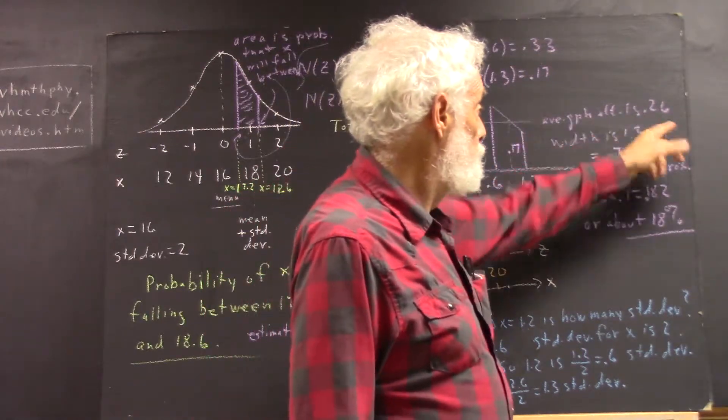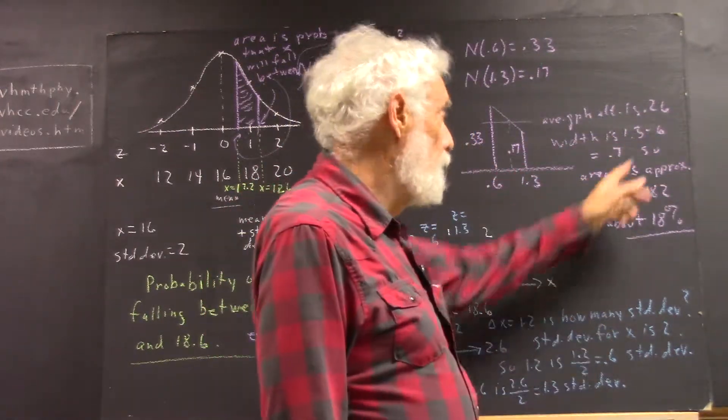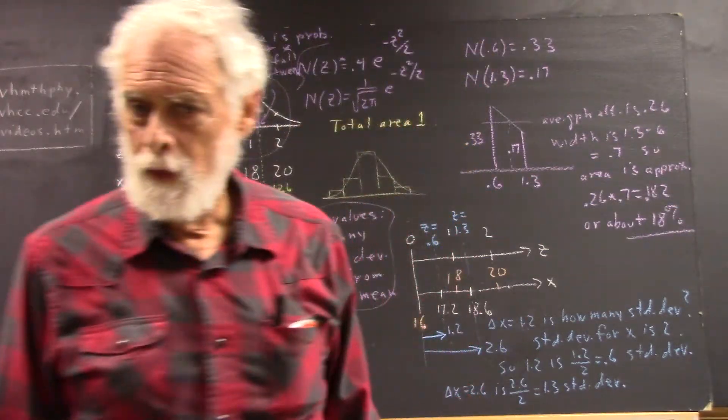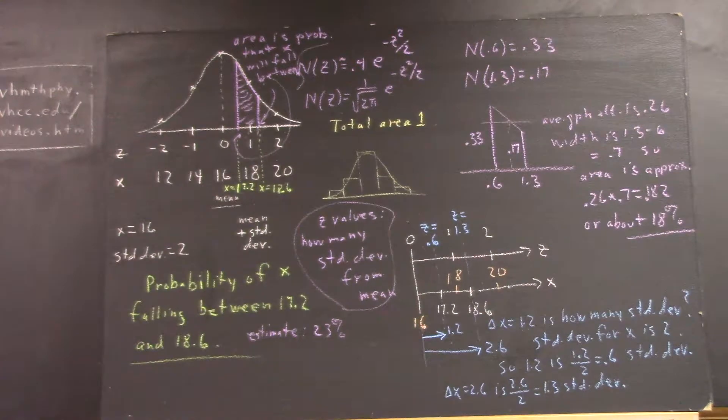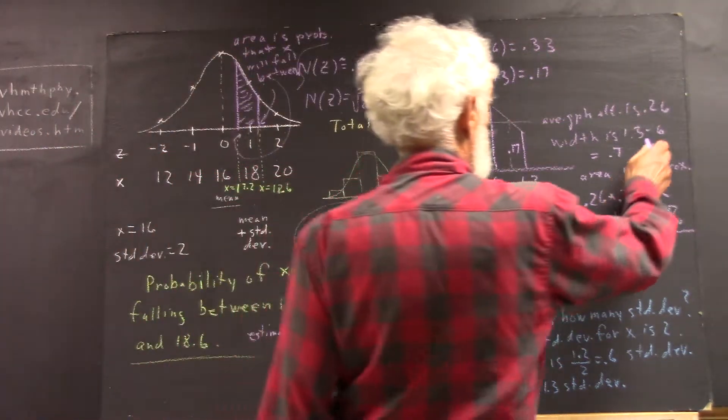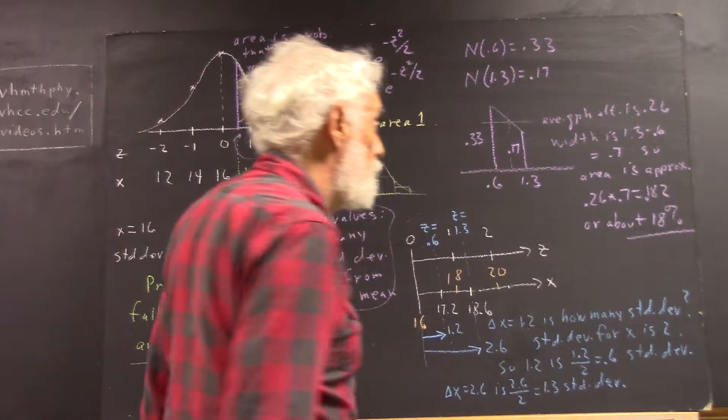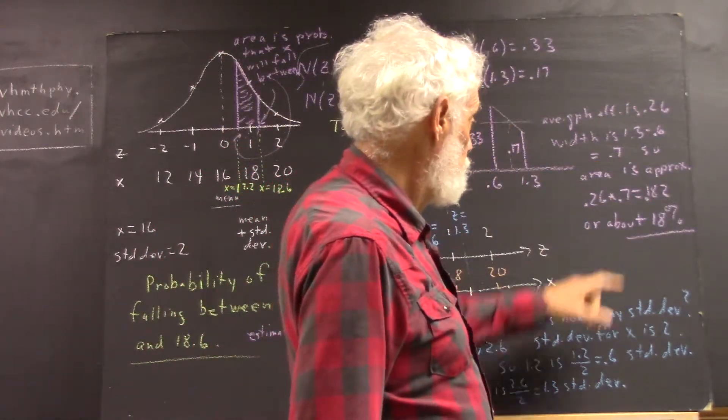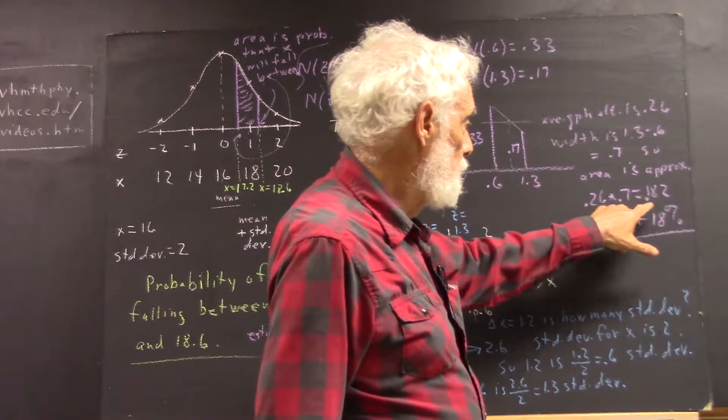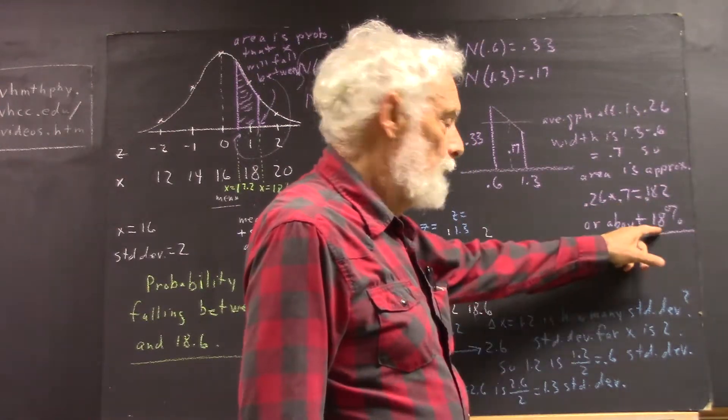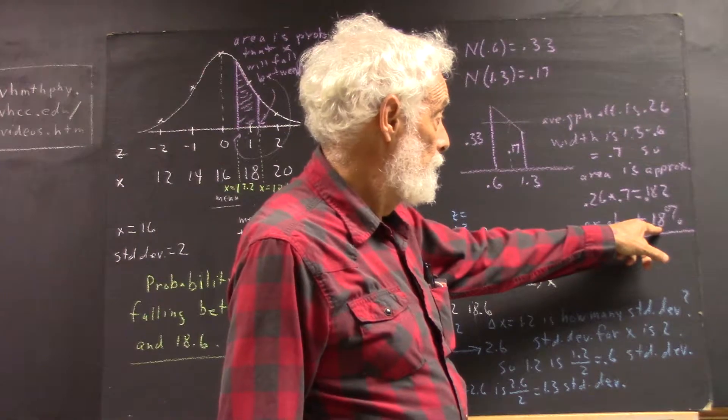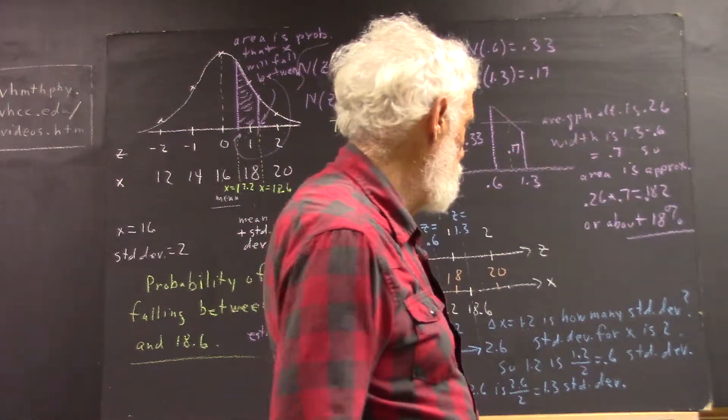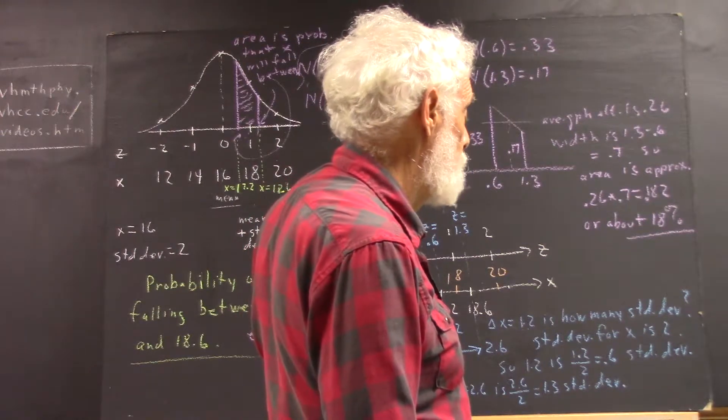But that's the average graph altitude. The width is 1.3 minus 0.6. And there is a clear decimal in that 1.3, but I sure don't see it on the 0.6. That's 0.7. So the width times the average graph altitude is 0.26 times 0.7, 0.182. We get that about 18%. It would still round off to 18% if we use 0.25 there.